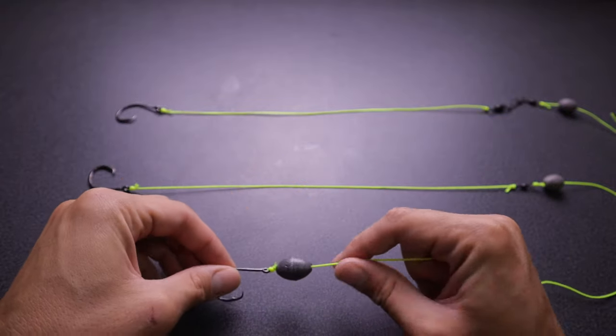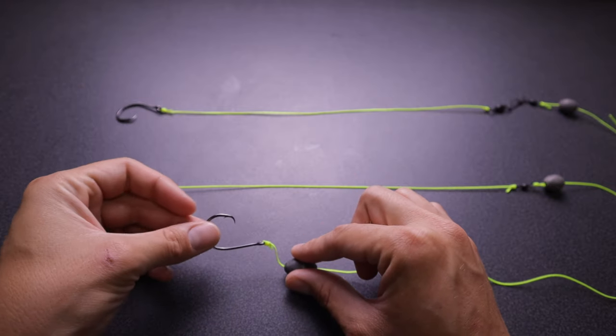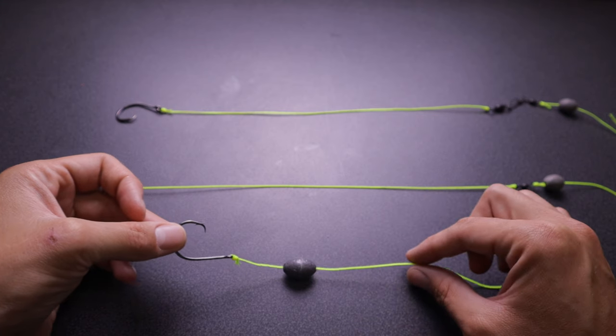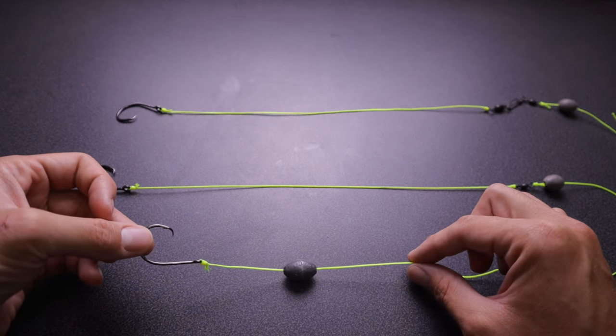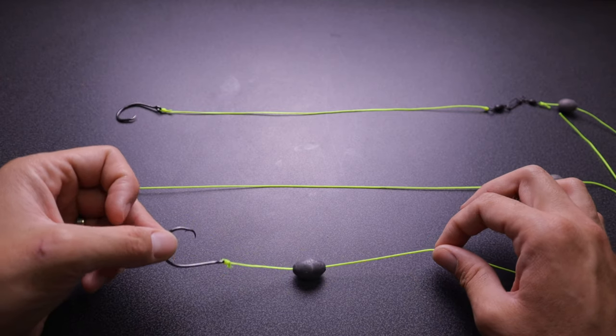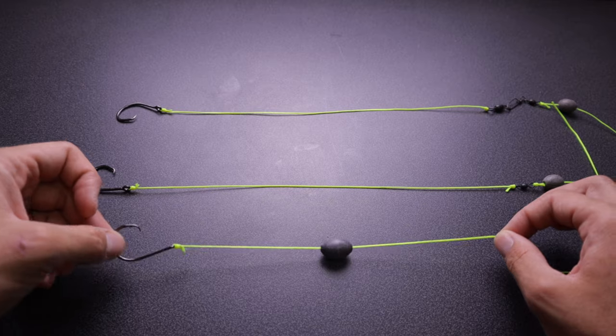Another good thing is as that weight is sitting on the bottom, as soon as a fish bites your bait you're going to feel that because it's connected directly to your main line. You'll have awesome sensitivity, and as soon as that grouper picks up the bait you'll feel it. That's when you can reel, set the hook, and it's game on.